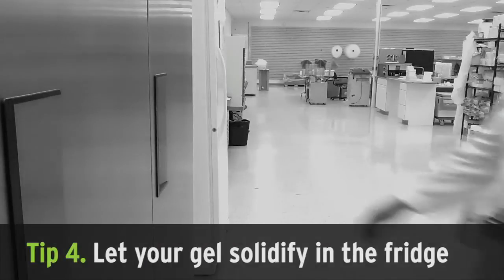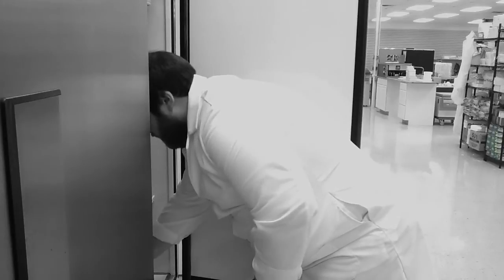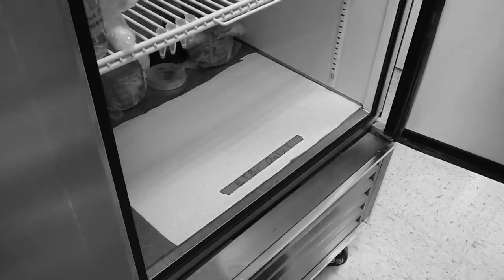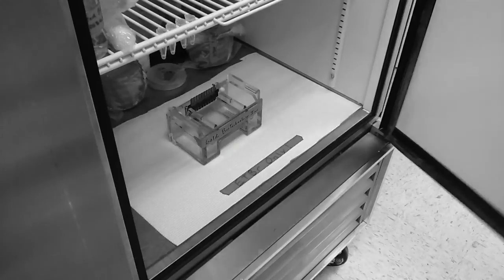Tip number four, let your gel solidify in the fridge. Once the gel is poured, I very carefully transfer the casting box to a designated spot in the refrigerator. I also keep my casting apparatus in the fridge so it's already cold when I add the gel. Just make sure the spot in the fridge is relatively level and make sure no one bumps it if they're getting something else out.